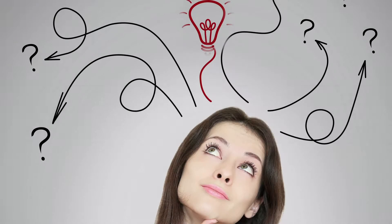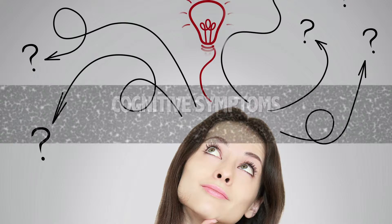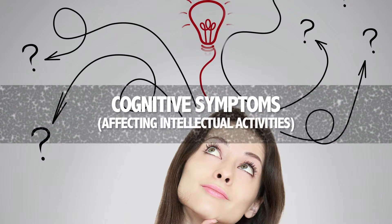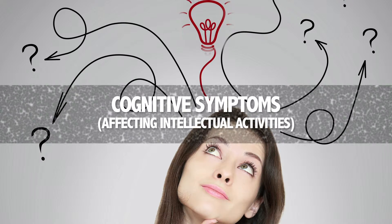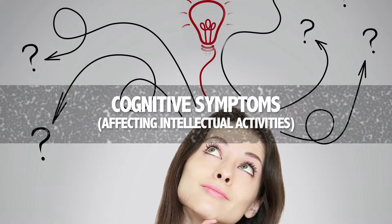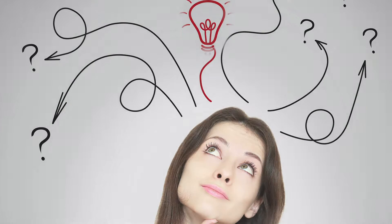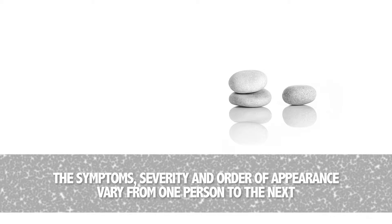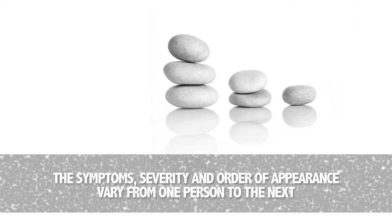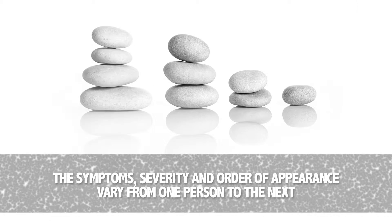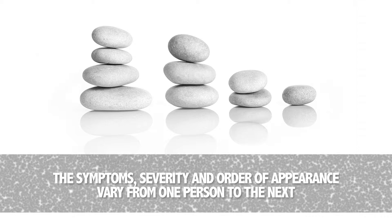Huntington's disease presents several cognitive symptoms, therefore affecting intellectual activities. We describe here the most common ones. It should be noted that an affected person may not necessarily present all of the symptoms described here. Furthermore, the severity and the order of appearance will vary from one person to the next.